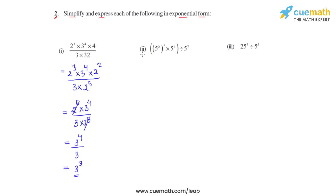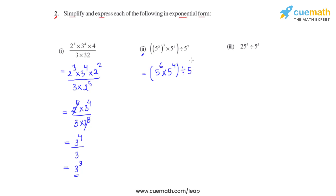In the second bit, we simplify the numbers inside the brackets first. We have 5 raised to 2, whole raised to 3 — so the powers get multiplied, giving 5 raised to 6. This is times 5 raised to 4, and the whole expression is divided by 5 raised to 7.